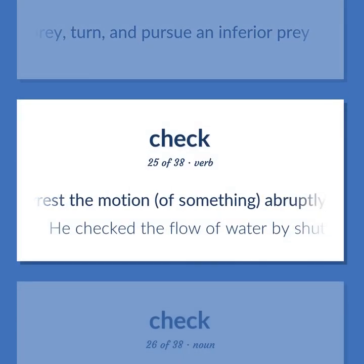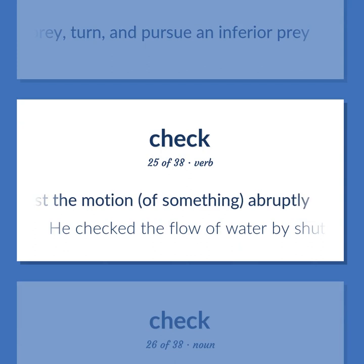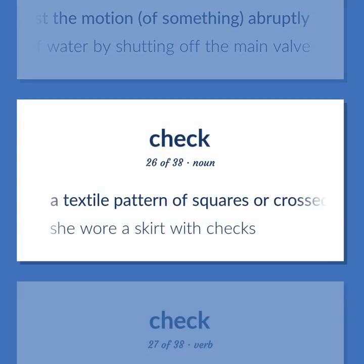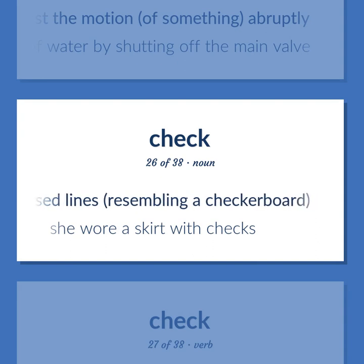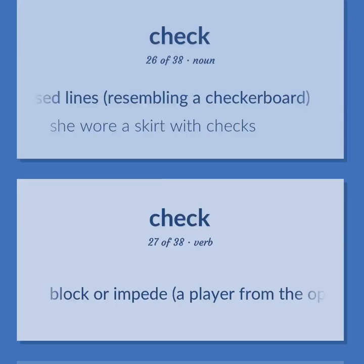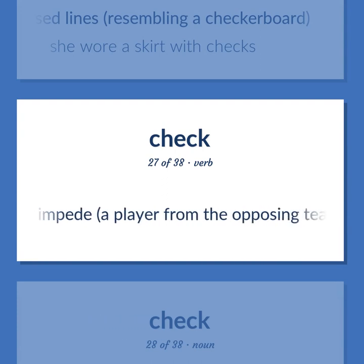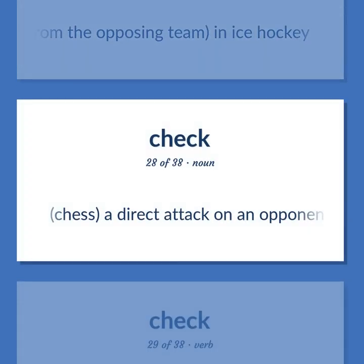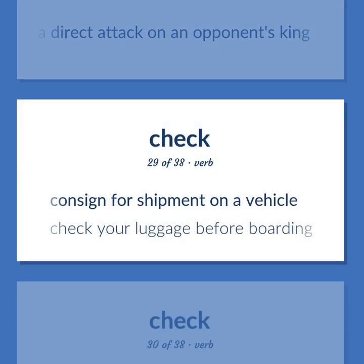Check: to arrest the motion of something abruptly — 'He checked the flow of water by shutting off the main valve.' A textile pattern of squares or crossed lines resembling a checkerboard — 'She wore a skirt with checks.' To block or impede a player from the opposing team in ice hockey. Chess: a direct attack on an opponent's king. To consign for shipment on a vehicle — 'Check your luggage before boarding.'